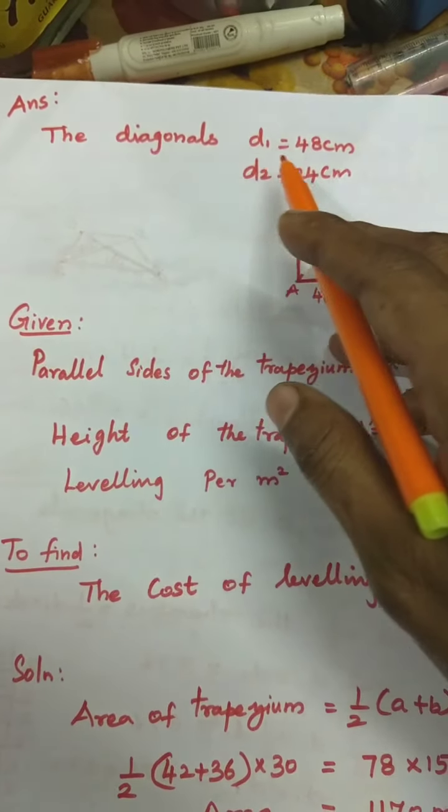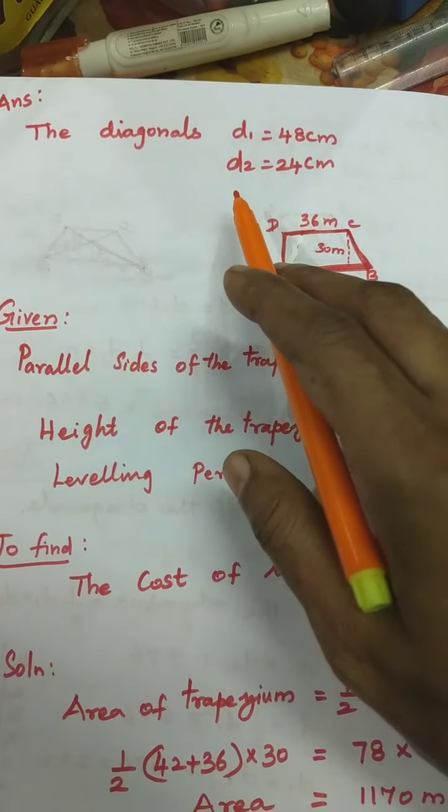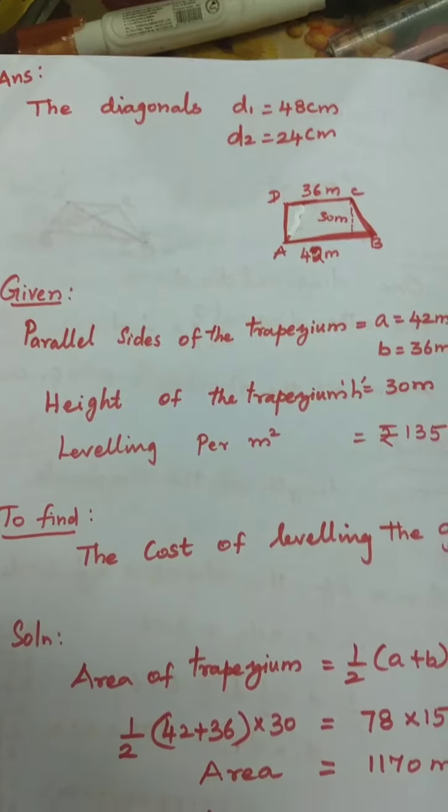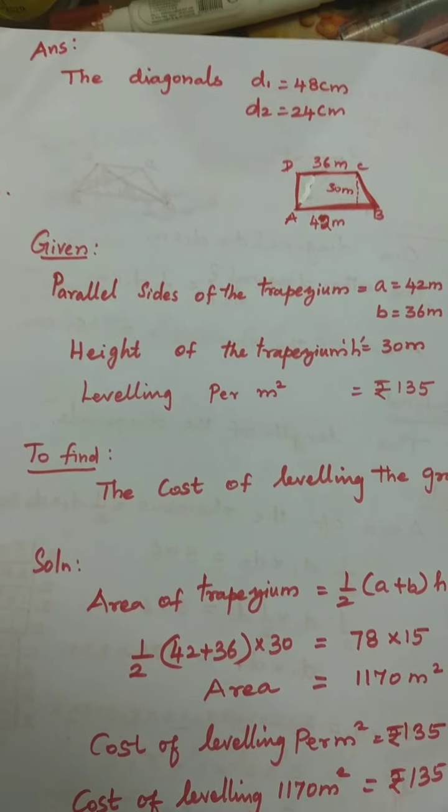Answer: d1 = 48 centimetres, d2 = 24 centimetres.